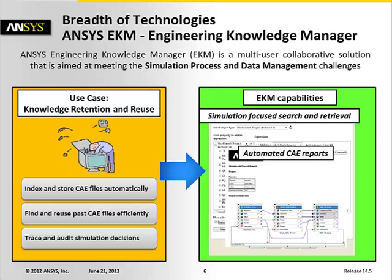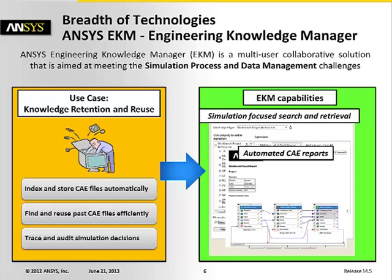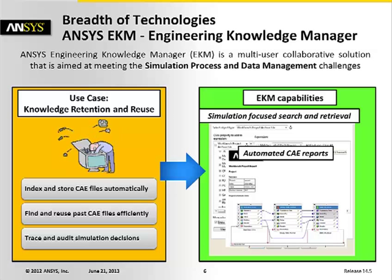Another useful tool within EKM is automatic CAE report generation. With the breadth of physics available in the ANSYS product portfolio, we can allow coupling of many of these types of physics together. This becomes more complicated when we start to look at coupling of physics together, so these types of reports allow a quick overview to understand how these physics are coupled together and the details of the simulation that's been conducted, giving us a single view level information on what was conducted for that particular simulation.